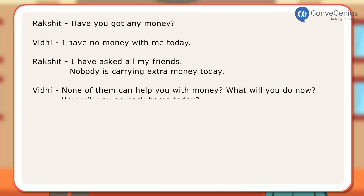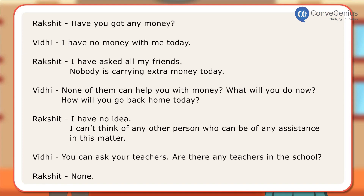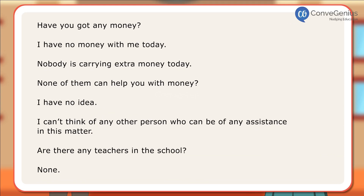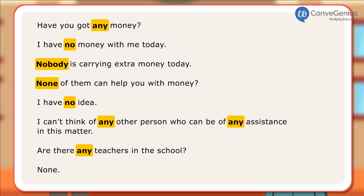In the conversation, Rakshat and Vidhi have used no, none, and any to express themselves. Here are some examples of sentences using no, none, and any: Have you got any money? I have no money with me today. Nobody is carrying extra money today. None of them can help you with money. I have no idea. I can't think of any other person who can be of any assistance in this matter. Are there any teachers in the school? None.